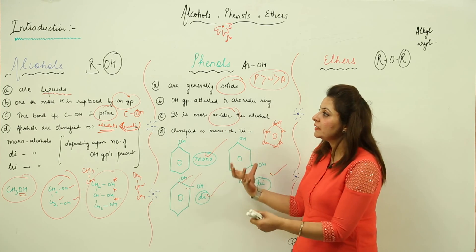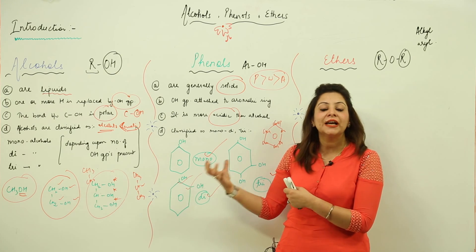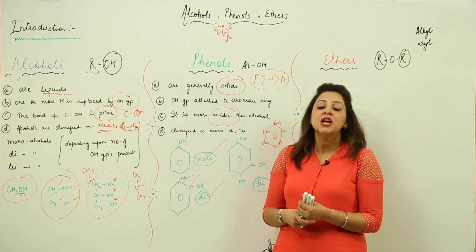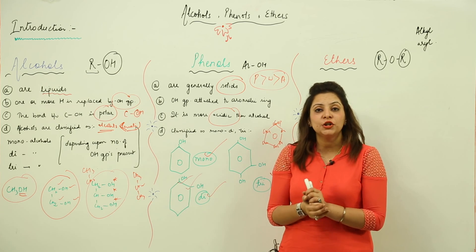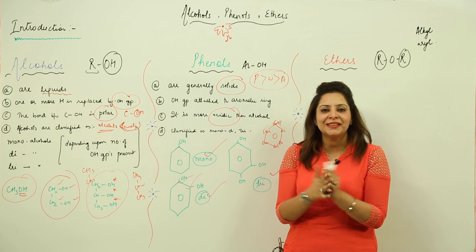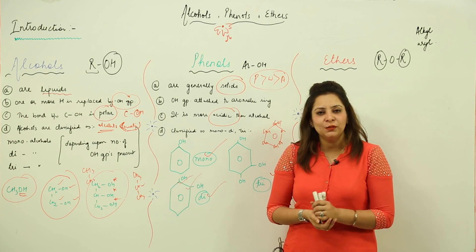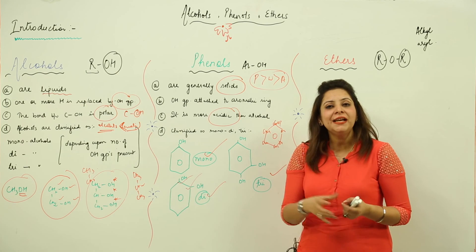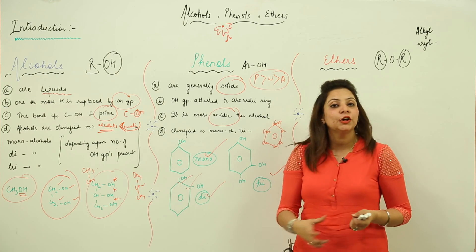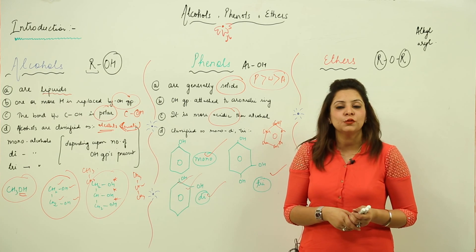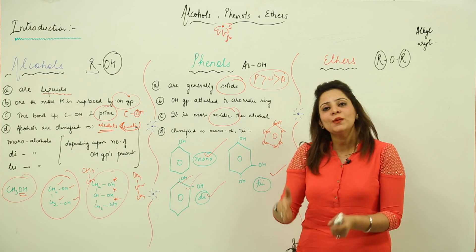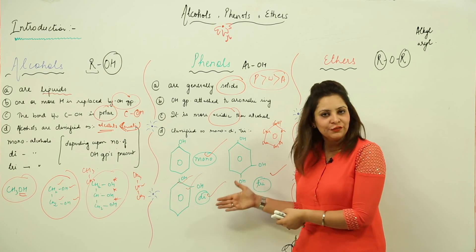So these are the basic characteristics of alcohol and phenol. The key point is that depending upon the number of hydroxyl groups actually present, we classify alcohols into mono, di, and tri — and likewise we do it for phenol.